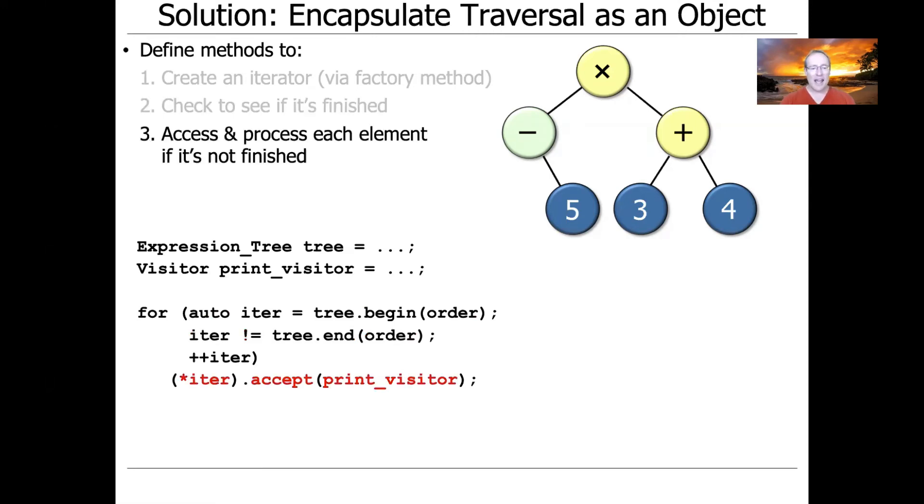we're going to go ahead and dereference the iterator, and then call a method on that, which in this case is the accept method, passing in the visitor that we're going to have, which in this case will be a print visitor. And that will go ahead and do something with that node. And then the last thing we do is we advance the iterator by one.